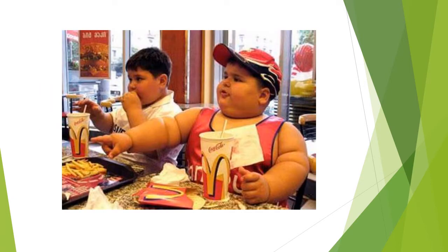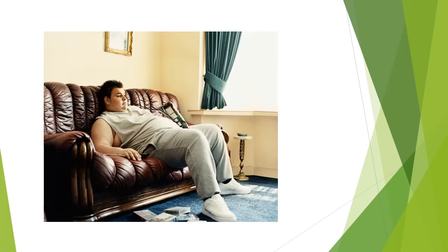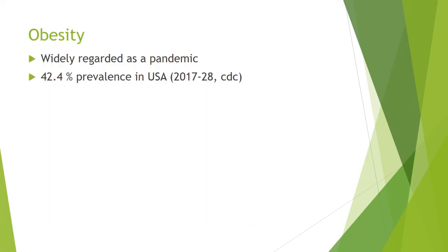This shows an obese child, illustrating how obesity rates are rising across young children's age groups. This is an obese person, showing clearly an obesogenic lifestyle which we will continue to discuss in more detail. Obesity is widely regarded as a modern pandemic. It has a 42.4% prevalence in the USA according to a 2017-18 study by the CDC.